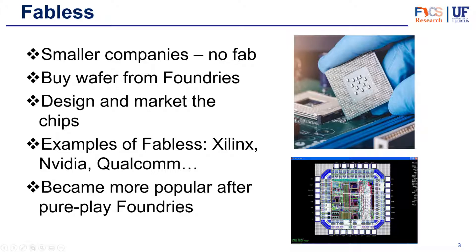These types of companies became really popular after Pure Play Foundries started coming up. Because in earlier days, foundries used to do the entire process — they would make their own wafers and package their own chips. But as the industry evolved, Pure Play Foundries came up, so it was easier to start a fabless semiconductor company that would do the design and buy the wafers from companies like TSMC or Global Foundries.